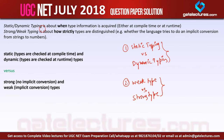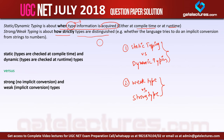Static versus dynamic typing is about when the type information is acquired — either at compile time or at run time. Type information means the type of a variable. Strong typing is about how strictly types are distinguished — whether the language tries to do an implicit conversion from a string to a number, or whether it requires explicit conversion. I will explain with a clear example.